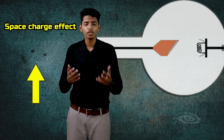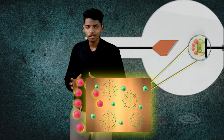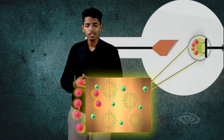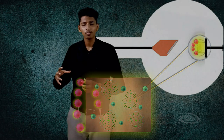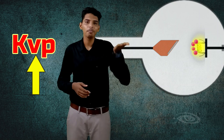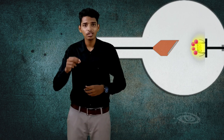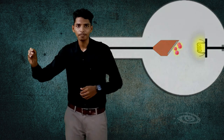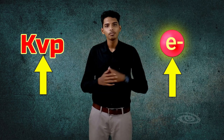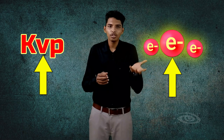There is a problem when you increase the tube current: the space charge effect occurs, where electrons form a cloud near the filament, causing electrons arriving behind to be repelled back into the metal. To overcome this problem, we increase the tube potential — that is, kVp. If we increase kVp, the electrons gain sufficient energy and move at high velocity. Keep in mind that increasing kVp increases the energy — that is, the velocity — of the electrons.